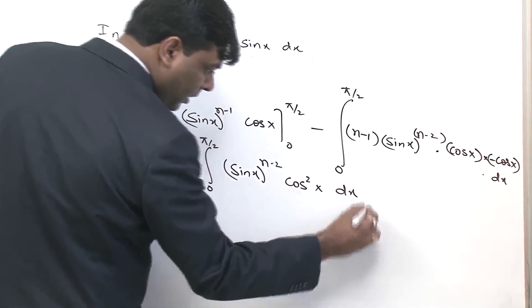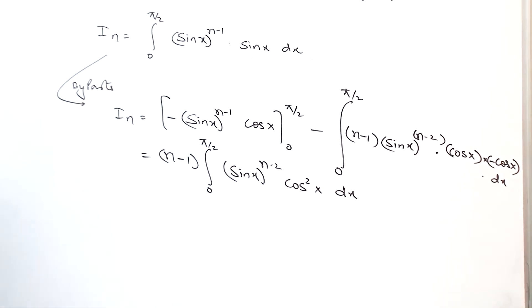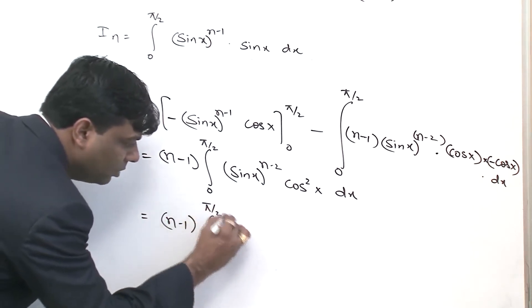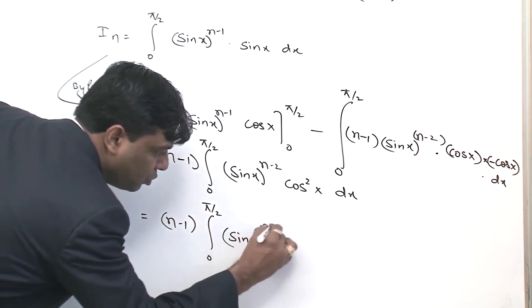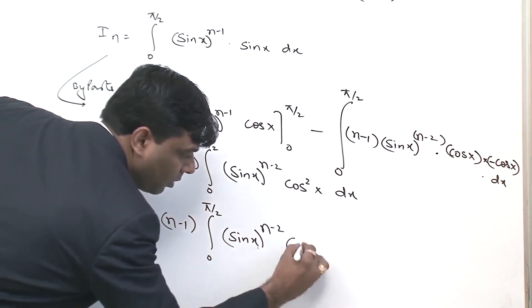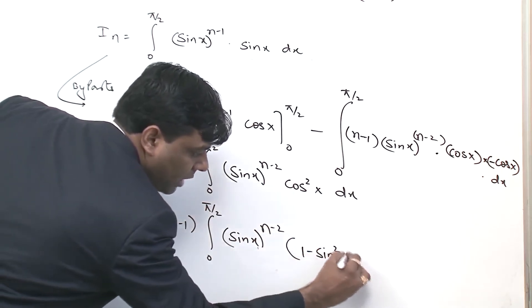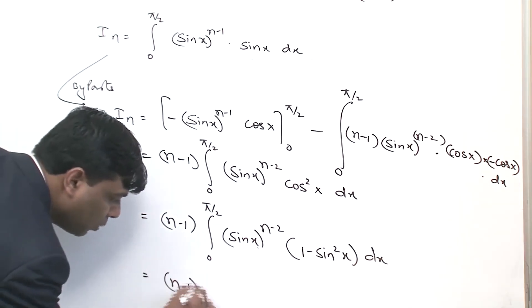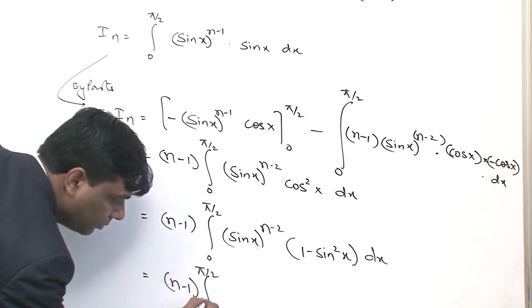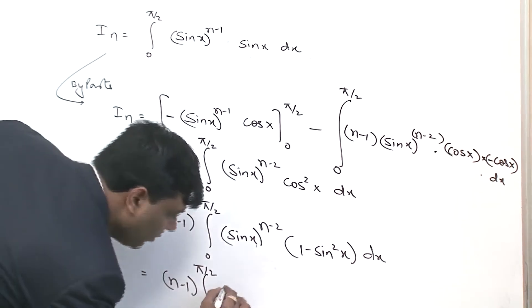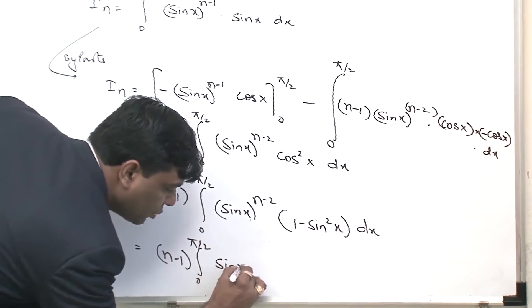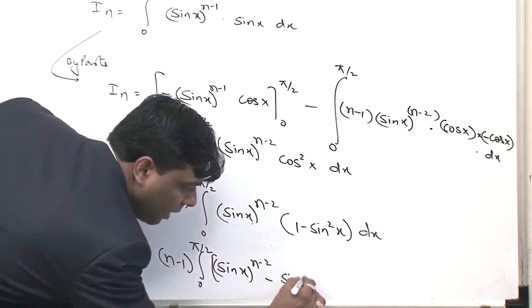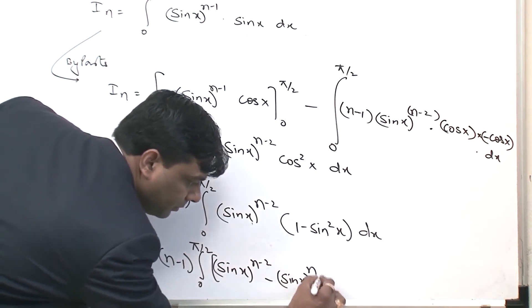This becomes cos squared x equals 1 minus sin squared x, so that is equal to n minus 1 times the integral from 0 to π/2 of sin x to the power n minus 2 times (1 minus sin squared x) dx, which expands to sin x to the power n minus 2 minus sin x to the power n dx.